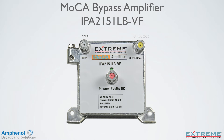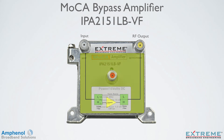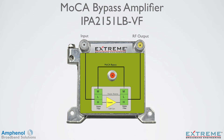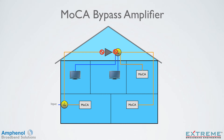Here we're looking at the IPA2151LB-VF bypass amplifier, which has one input and one output. With this amplifier, an additional MoCA filter stage is added to the diplex filter, making it a triplex filter, and a bypass path is installed around the amplifier stage. This allows the MoCA signal to pass from the input to the output, or output to the input. Now instead of having to rewire the home to make MoCA work, we can install the MoCA bypass amplifier, and the MoCA signal can communicate to the MoCA devices on both the input and output of the amplifier.